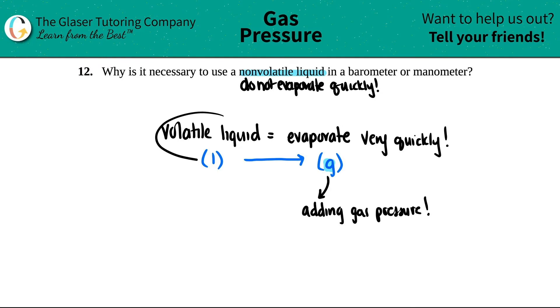If a volatile liquid was added and you're adding gas pressure into your barometer, the readings are going to be off. There's going to be error. So it's going to affect the measurement of the pressure in your barometer or your manometer. So that's why it is necessary to use a non-volatile liquid because these liquids don't evaporate and they will stay a liquid and they will not affect your pressure measurements in your barometer or your manometer.